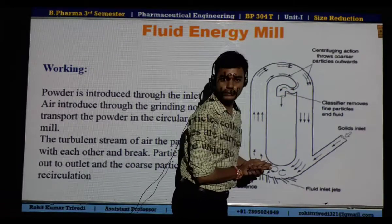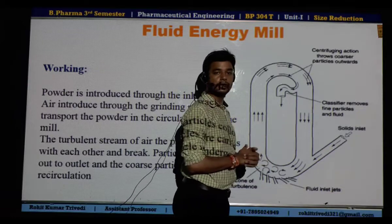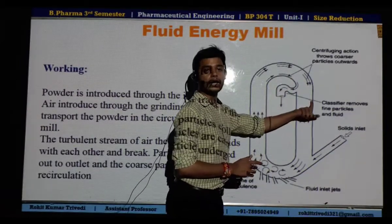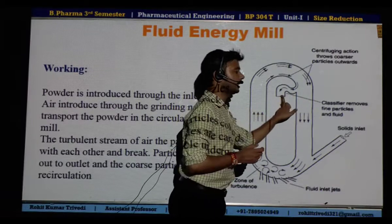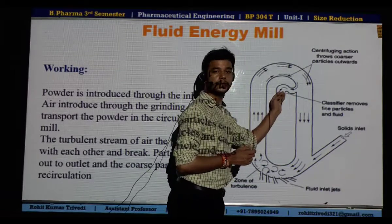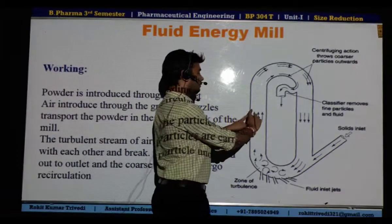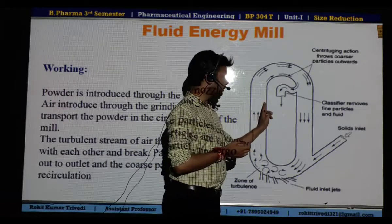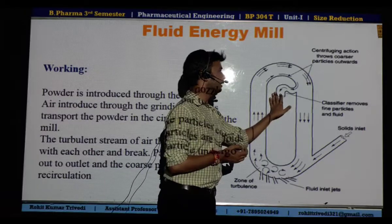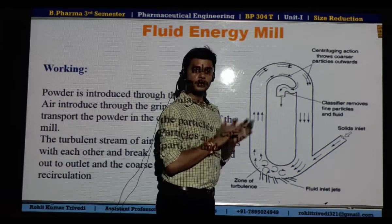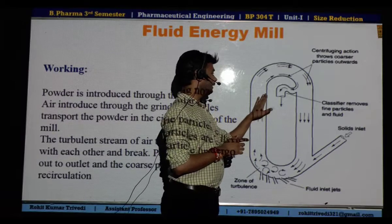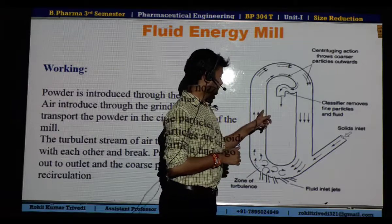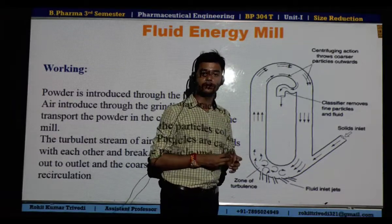The small particles are collected in the classifier and removed from the machine for further utilization in pharmaceutical manufacturing. The large-size particles keep moving inside the machinery until they become small and fall inside the classifier. The larger particles undergo attrition and impact, which reduces their size. Large-size particles move along the outside surface, and small particles move along the inside surface due to centrifugal force.